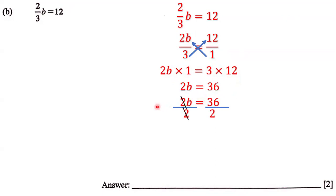And so we cancel this 2 with this 2, and we're left with b equals 36 divided by 2. Now 36 divided by 2 is simply 18, and so the answer to this linear equation is b equals 18.